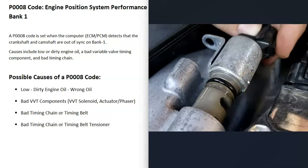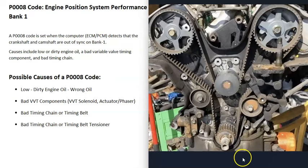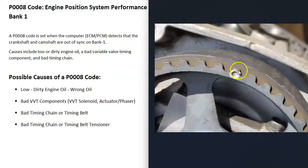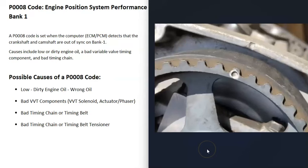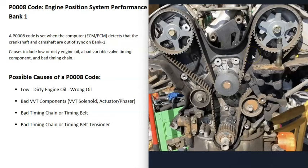The next thing that could cause this is a bad timing chain or timing belt. All of these are going to have a timing mark and everything needs to be correct. If one of these marks is off — for example, if the belt slipped and the mark was a little before or after — that's going to throw everything off and cause a P0008 code. Another thing that happens with timing belts or chains is that when they get a lot of miles and age on them, they can get stretched and become looser than they should be, which can also throw everything off.